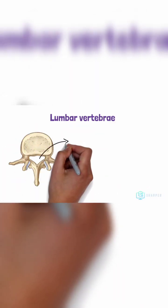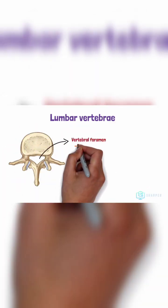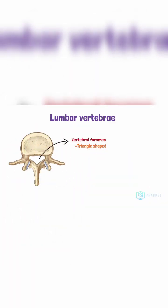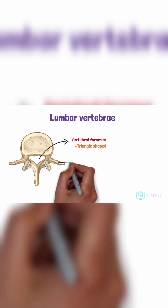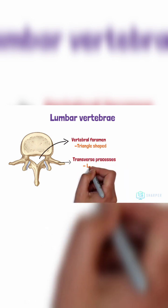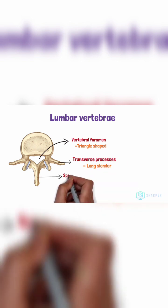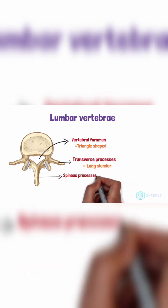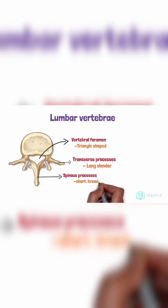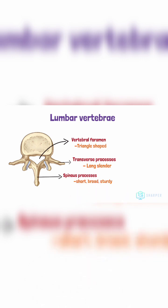Typical lumbar vertebrae also have a triangle-shaped vertebral foramen, which is bigger than the thoracic vertebrae but smaller than the cervical vertebrae. The lumbar vertebrae also have long slender transverse processes that extend laterally and short, broad, sturdy spinous processes.